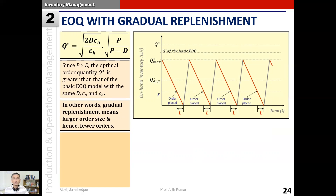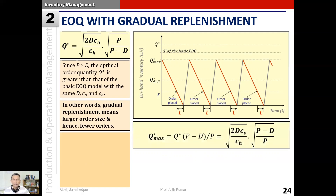Next, let's look at the maximum inventory level reached. q*_max = q* × (p minus d)/p, which gives the expression: square root of (2d·co / ch) times square root of (p minus d)/p. What has happened between the two formulae is that the factor has become the inverse - we are now multiplying by square root of (p minus d)/p. Earlier in the basic EOQ model we had only the first part of the q*_max formula.